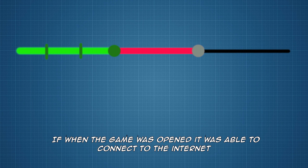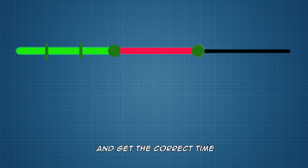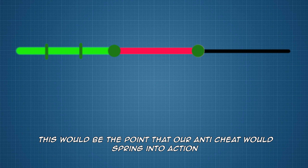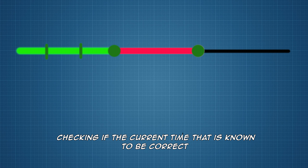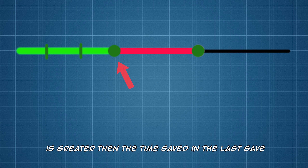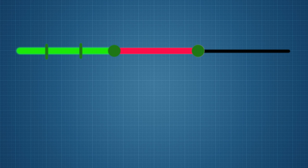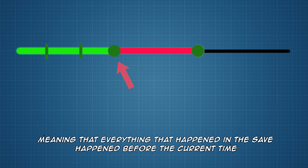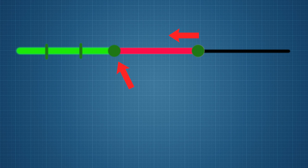If when the game was opened it was able to connect to the internet and get the correct time, this would be the point where our anti-cheat would spring into action, checking if the current time — known to be correct — is greater than the time saved in the last save, meaning that everything that happened in the save occurred before the current time and is therefore legitimate.